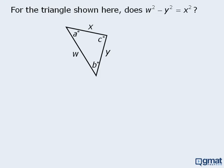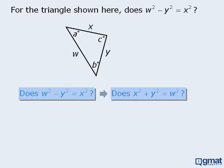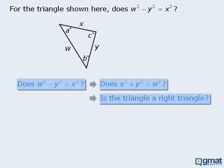In this question, we want to determine whether w squared minus y squared is equal to x squared. We could move the variables around to ask: does x squared plus y squared equal w squared? Now if x squared plus y squared were to equal w squared, then we would have a right triangle. So we could ask: is this a right triangle? Or we could ask: does angle C equal 90 degrees? There are several ways to rephrase the target question, and each new wording suggests another way in which corresponding statements could be sufficient.